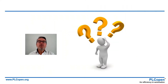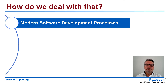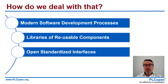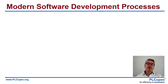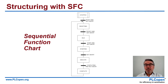So how do we deal with all these complexities and typical software problems? First of all, you use modern software development tools. On top of that, you use libraries of reusable components. Open standardized interfaces help there, and you create an application program that is independent from the hardware and underlying architecture — making it more reusable and better understandable for the different people working on it. Keywords for the modern software development process are structuring, decomposition, reuse, encapsulation, and abstraction.